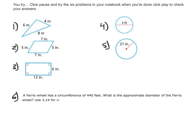Okay, now that you know how to find the perimeter of polygons and the circumference of circles, you try. Click pause and try the six problems in your notebook. And when you're done, click play to check your answers. From numbers 1 through 3, find the perimeter of the polygons. 4 and 5, the circumference of the circle. And number 6, it's a word problem. Use the given information to find the circumference of the ferris wheel. Good luck.